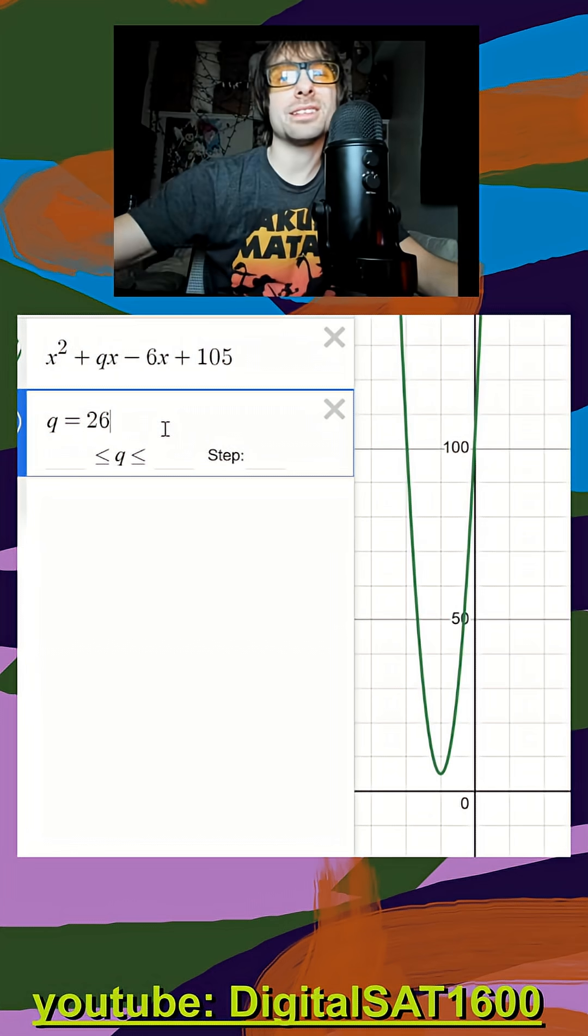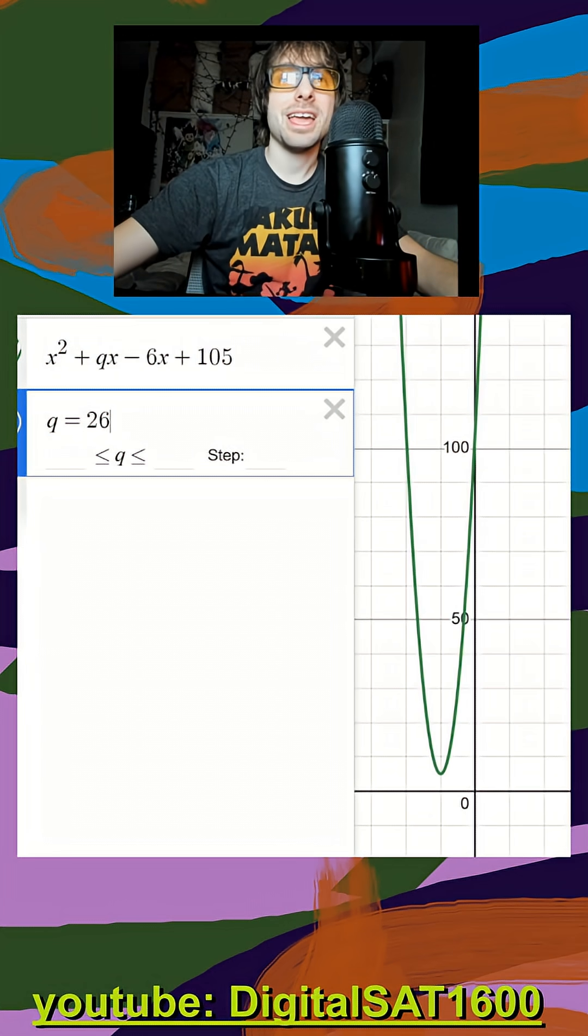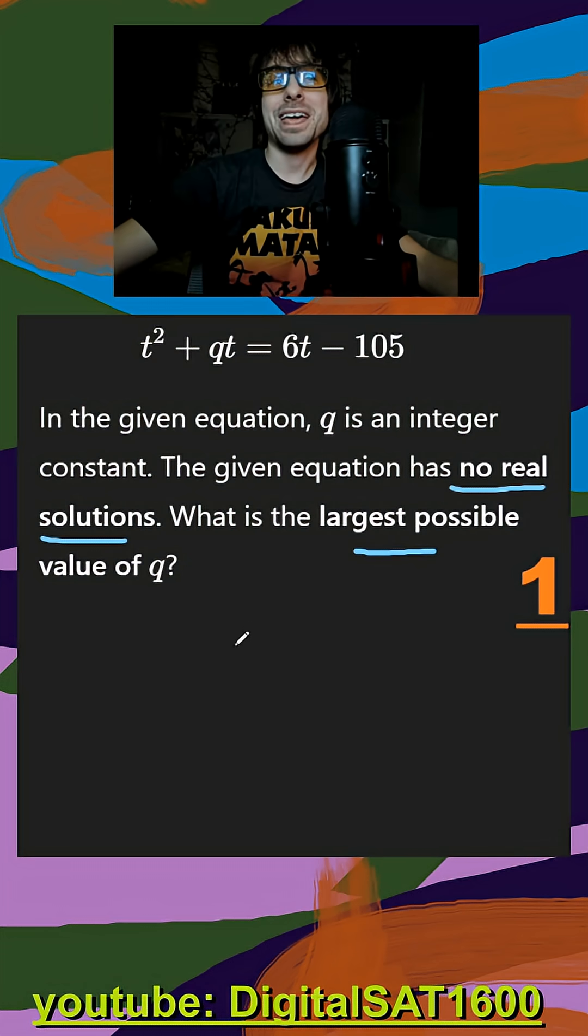So the closest I can get, it looks like it's going to be positive 26. I jump back to my question, and my q value is actually just going to be 26. And that's it.